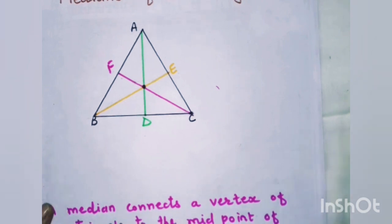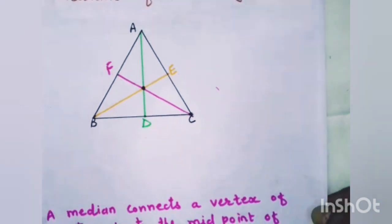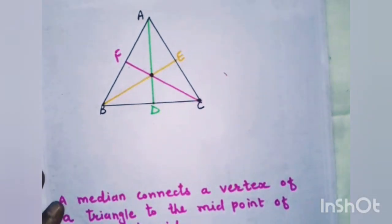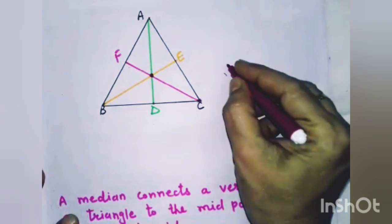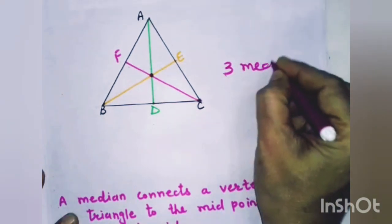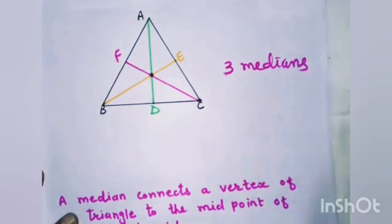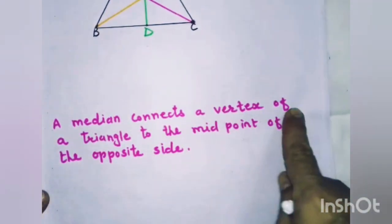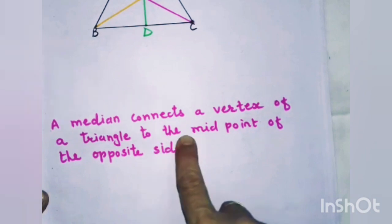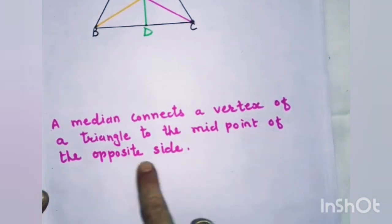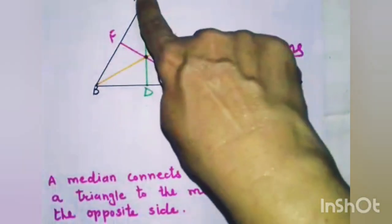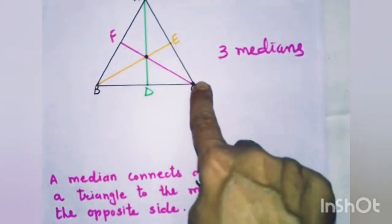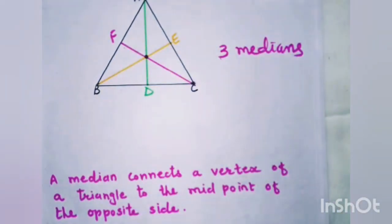Clear? Now here you can see that a triangle has three medians. And a median connects a vertex of a triangle to the midpoint of the opposite side.